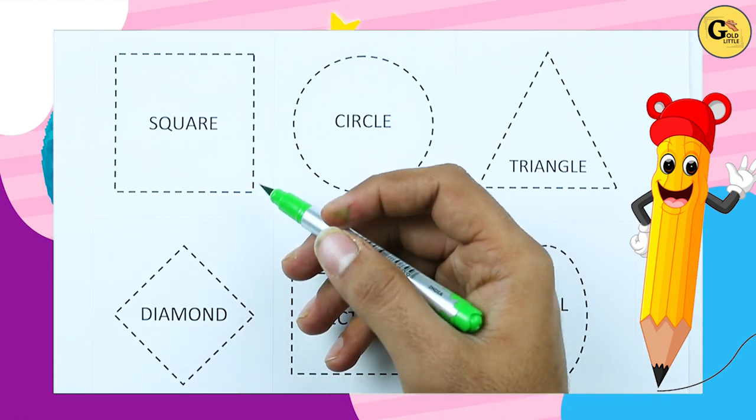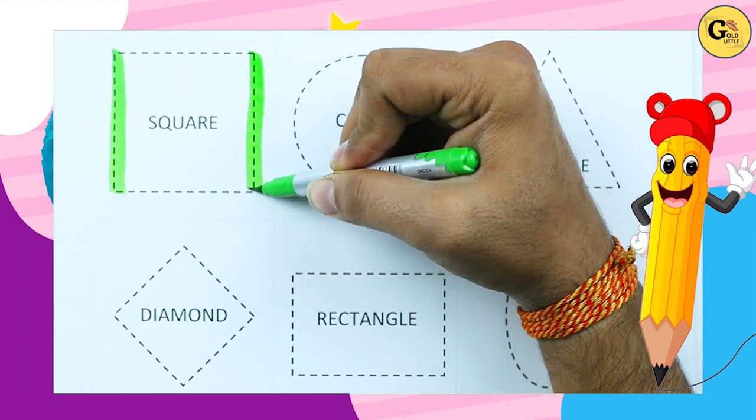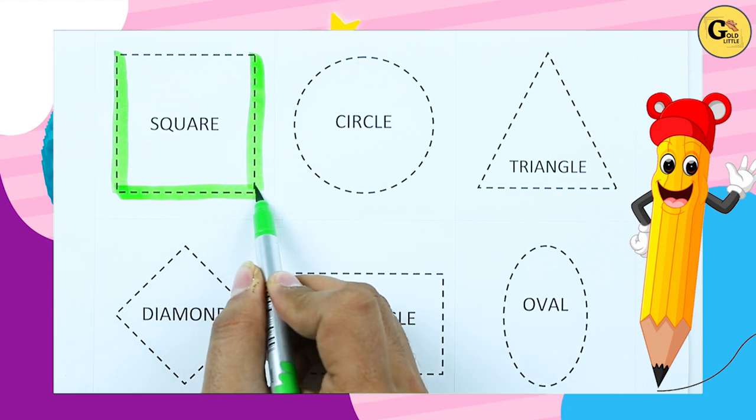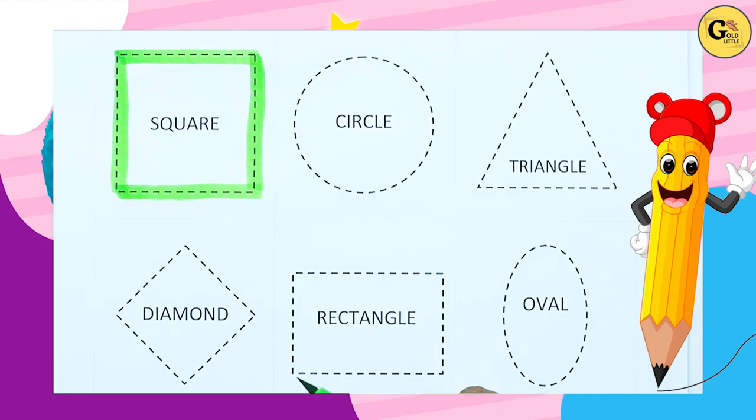It's a square. One line, two line, three line, four line. Two slipping lines, two standing lines.